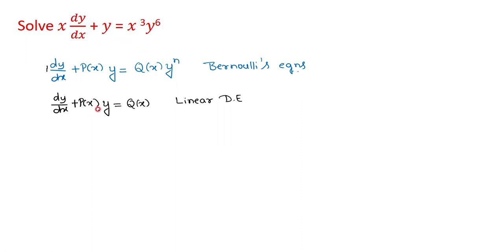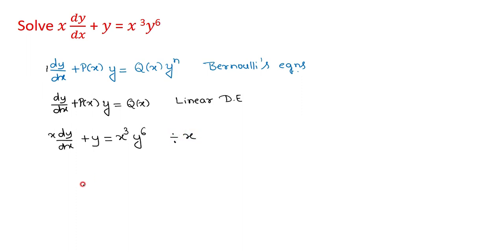First we will reduce this equation to the Bernoulli's equation, and then we will go for reducing it to the linear differential equation by dividing a term with y raised to n. To reduce the given problem to Bernoulli's equation, divide throughout the equation by x. So it is: x dy/dx plus y is equal to x cubed y raised to 6, divided by x, so that the coefficient of dy/dx is equal to 1. It becomes: dy/dx plus y/x is equal to x squared y raised to 6. This equation is a Bernoulli's equation.